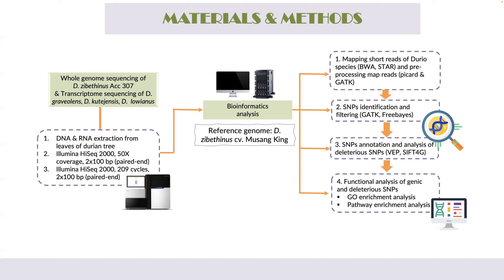For bioinformatic analysis, to identify the SNPs we performed mapping of short reads against the Durio zebanthinus cultivar Musang King reference. For genome mapping, we used BWA, while for RNA-seq mapping, we used STAR. For SNP identification, we used GATK and FreeBayes, then variant concordance to identify true SNPs. For SNP annotation and analysis of deleterious SNPs, we used VEP and SIFT. We also performed functional analysis of genic and deleterious SNPs using GO and pathway enrichment analysis.